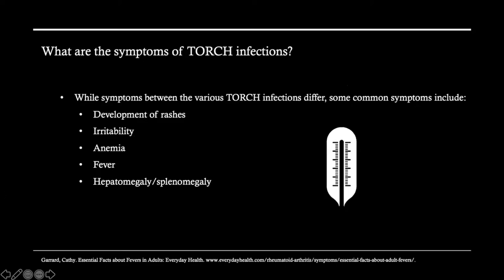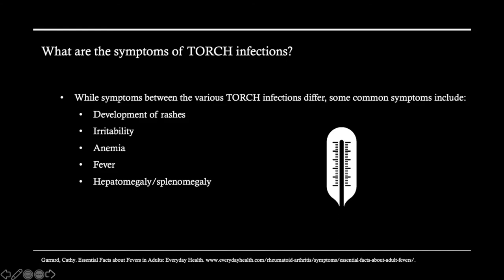In discussing TORCH infections, it's important to determine the symptoms that are common amongst all of them, as well as symptoms that differ between the various conditions. Some common symptoms include development of rashes, irritability, anemia, fever, hepatomegaly, and splenomegaly. However, not all of these presentations will be present for each disease state — they may vary. These are just general, broad, overarching symptoms.